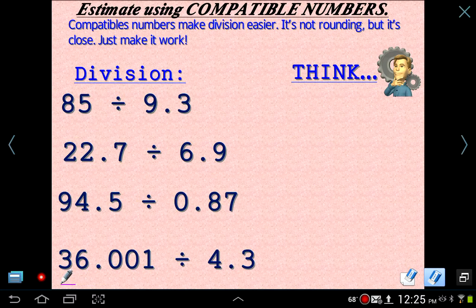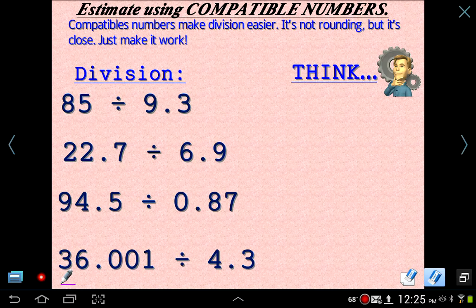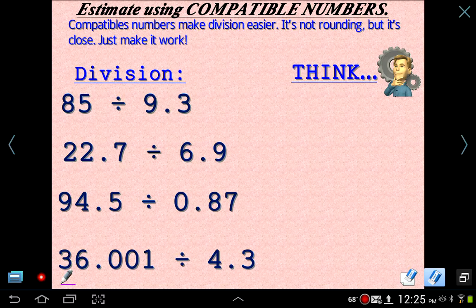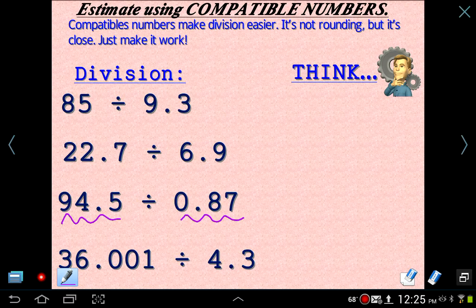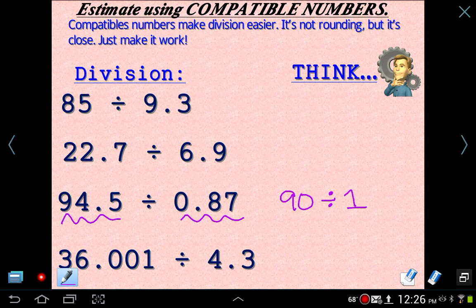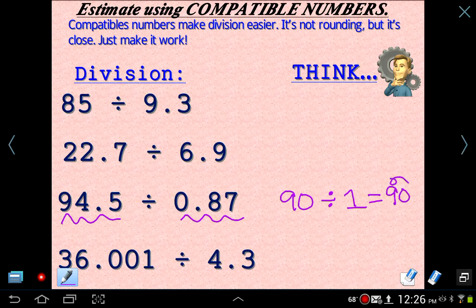Alright, so let's move on here. 94.5 divided by 0.87. Again, you might be able to have a little bit of free thinking here, where you can kind of do it your own way, but just remember, try not to change these by a lot. So I'm going to do 90 divided by 1, which couldn't be any simpler. 90 divided by 1 is 90. So that's what I'm going to think.